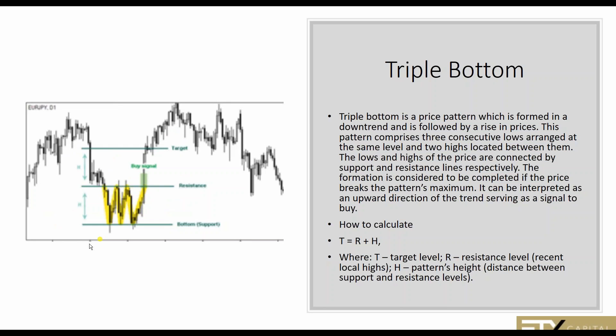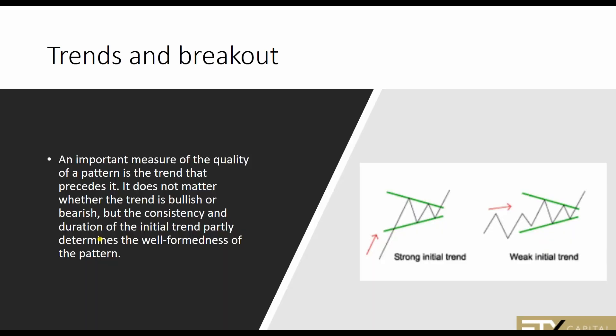A triple bottom is a price pattern formed in a downtrend followed by rising prices. It comprises three consecutive lows — just the opposite of a triple top — and the calculation is the exact opposite: Target equals R (the resistance level) plus the difference between the resistance and the support level. It's ultimately important to look at the pattern in conjunction with the trend line. If you have a strong initial trend, your pattern will be very reliable. With a weak initial trend, even if the pattern develops, it is not as reliable.